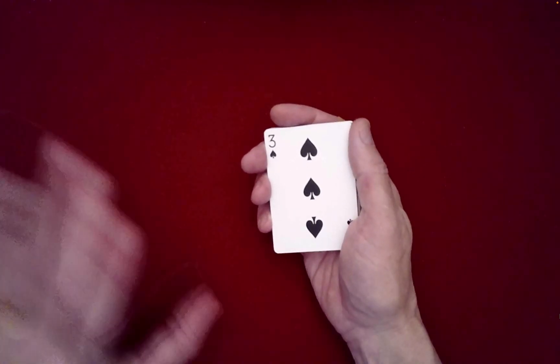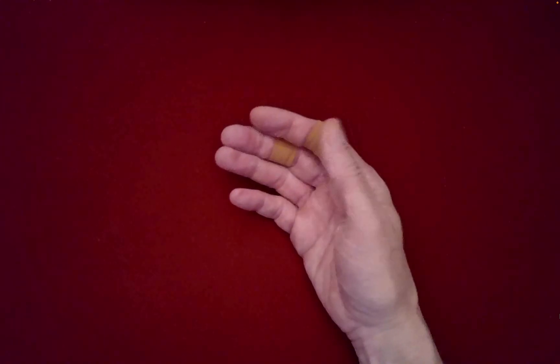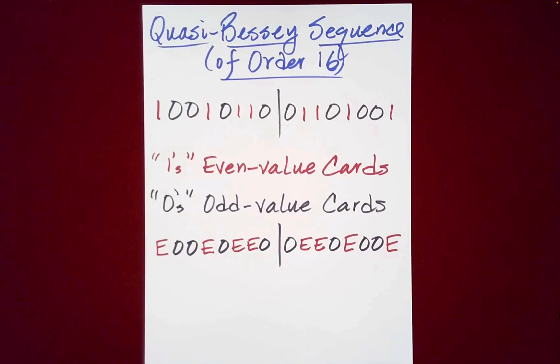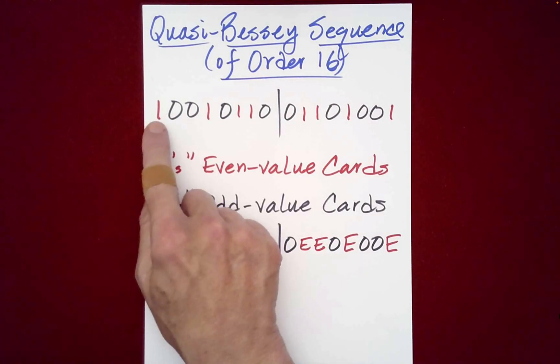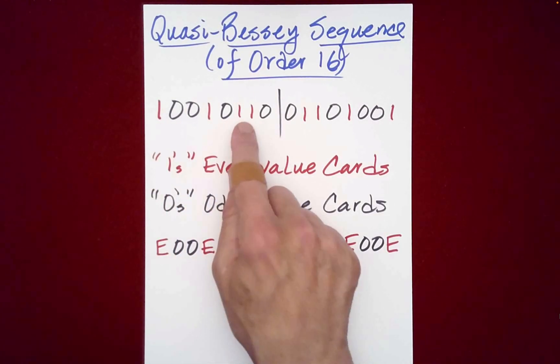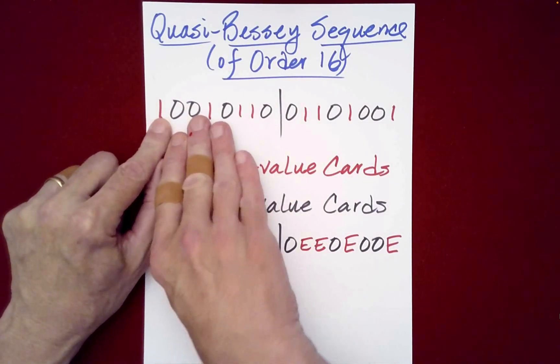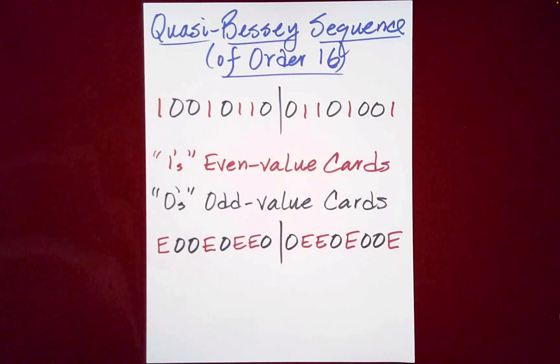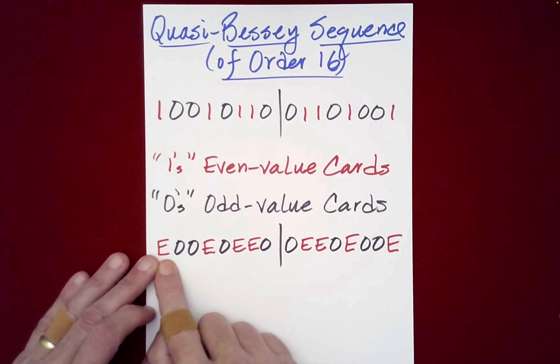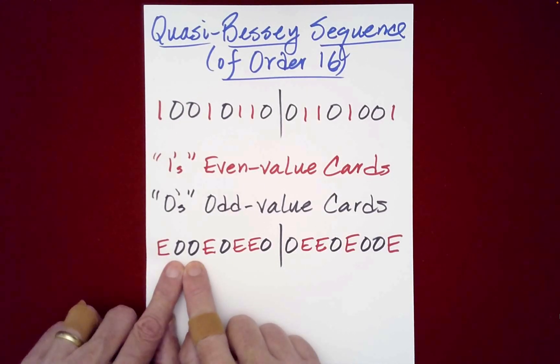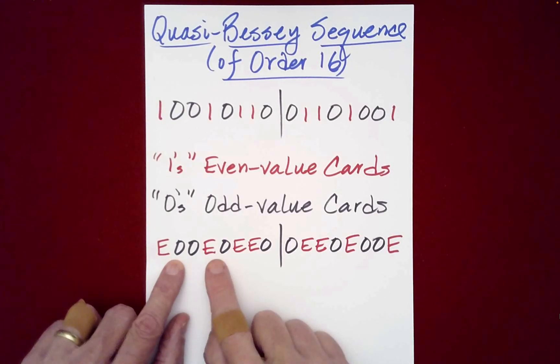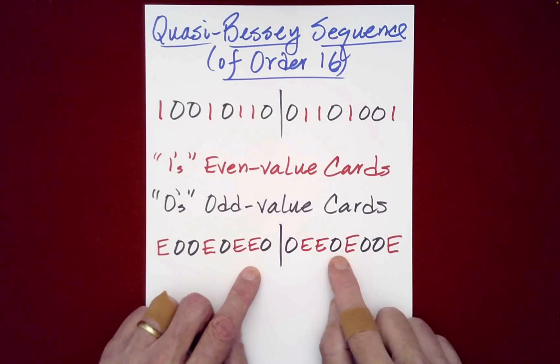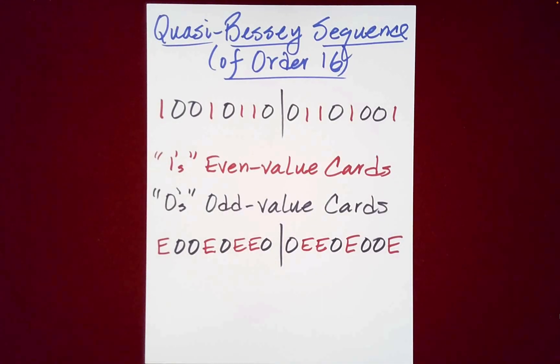Okay, so let me just quickly show you how I set up the packet. So a quasi-Bessy sequence is as follows: it's like one, zero, zero, one, zero, one, one, zero. And then this thing gets reversed and then copied over here. This is just a dividing line. So all I did was I had an even value card, two odd value cards at the beginning, and then an even, odd, to even, odd, and then odd, to even, an odd, even, two odd, and an even.